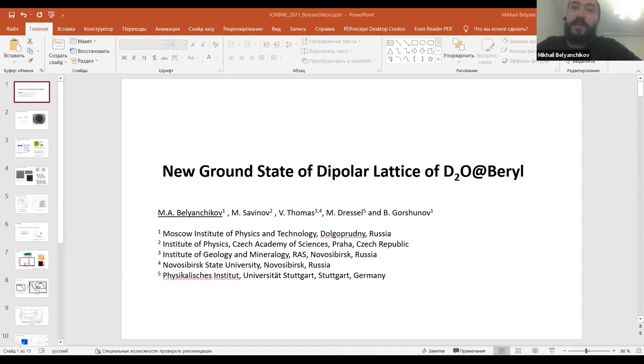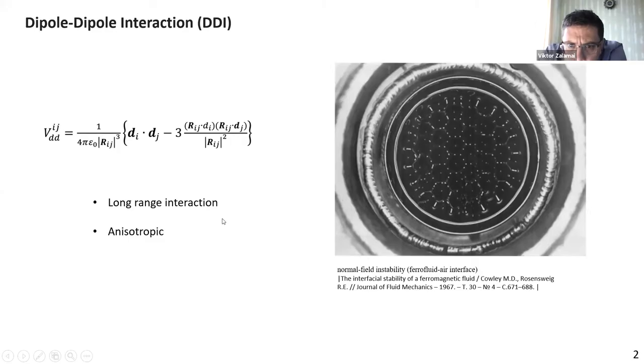The dipole-dipole interaction is quite interesting. Here you can see the formula, and from this formula we can see that this interaction is characterized by long range. The dipole-dipole interaction is long range and anisotropic, and these two features lead to new peculiar ground states.